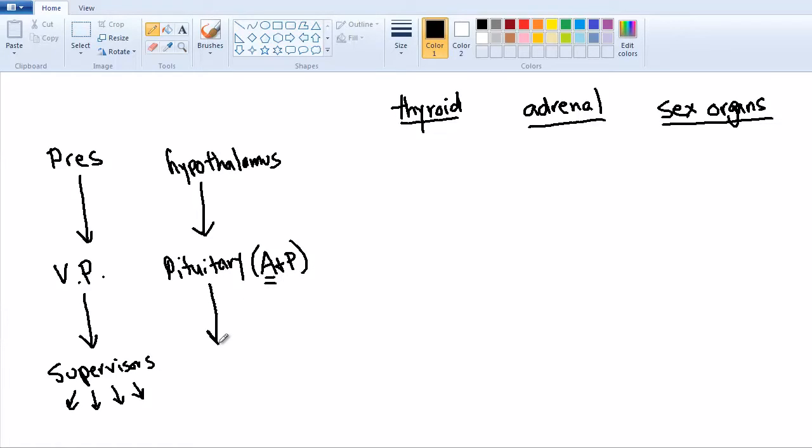And then after that we call the next set of organs target organs. I'm just going to abbreviate that right here as TO. The thyroid is a target organ. The adrenal gland is a target organ. And the testes and ovaries are target organs. So these are your target organs up here.